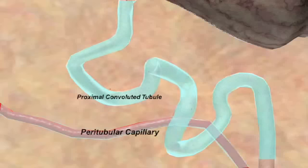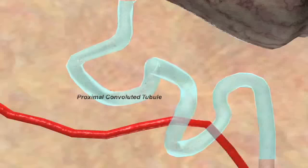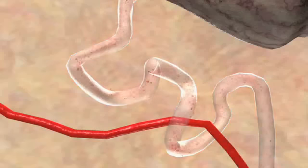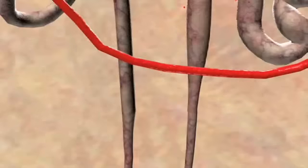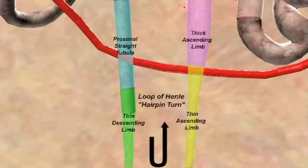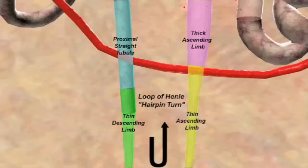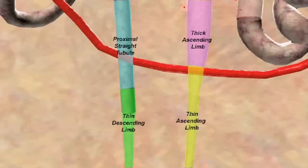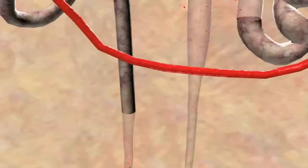Old diuretics called carbonic anhydrase inhibitors mostly act on this portion of the nephron. The proximal convoluted tubule leads into the loop of Henle, which has a thin descending limb and a thin and thick ascending limb. The thick ascending limb normally reabsorbs about 25% of the filtered sodium but does not allow water to reabsorb. The loop diuretics act here by blocking sodium-potassium chloride ion cotransporters on the luminal membrane.